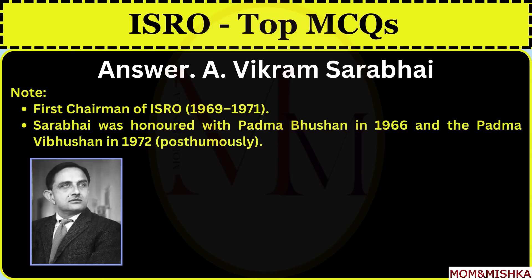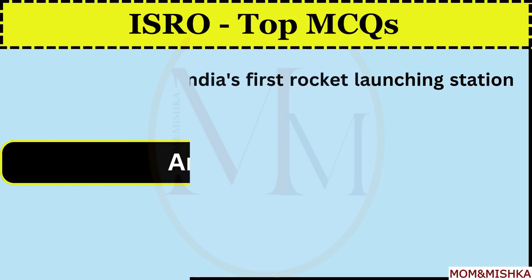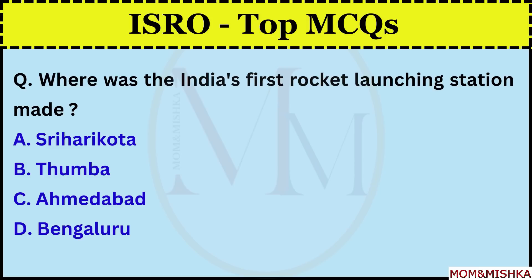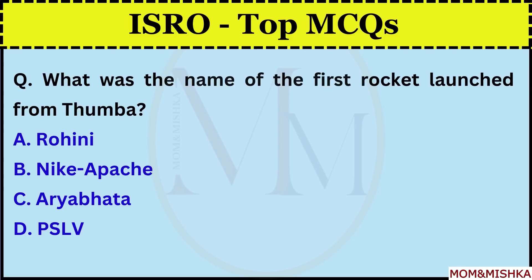In which year was the first rocket launched from India? In 1963, option C. Where was India's first rocket launching station made? In Thumba, option B. Thumba is a coastal area in Thiruvananthapuram, the capital of Kerala. Thumba Equatorial Rocket Launching Station (TERLS) is India's first rocket launch station, which lies near the equator. TERLS is operated by ISRO. TERLS was renamed as the Vikram Sarabhai Space Center in 1972 after the death of Dr. Vikram Sarabhai, the father of the Indian space program.